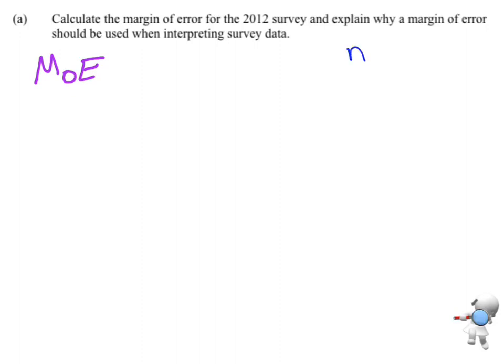So I know n is 802. This is just dealing with the 2012, I'm not doing a comparison, I'm just looking at a single group. So that means my formula is 1 over the square root of n.